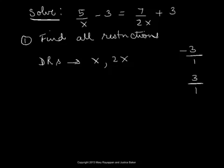Now we look for values that make the denominators zero. The denominators x and 2x will become zero when x is equal to zero. So the restriction will be x equals zero.